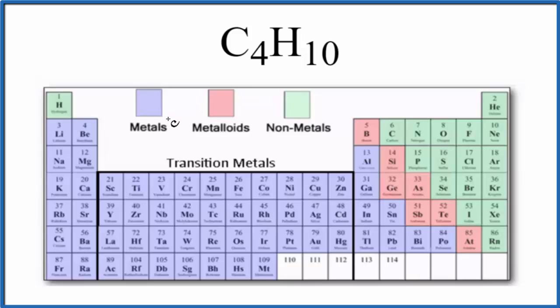If we look at the periodic table divided into metals, metalloids, and nonmetals, we find carbon right here. So carbon, that's a nonmetal, and then hydrogen all by itself over here with all these metals. Hydrogen's a nonmetal too.